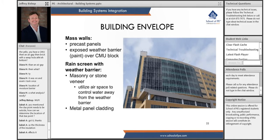Here's a slide covering different types of building envelope components. Mass walls can be precast panels or an exposed weather barrier, like select paint over CMU block. Sometimes you'll see CMU block with a coating — they refer to this as a coating, not paint — and CMU block with coating is going to be a mass wall type of modern building envelope.